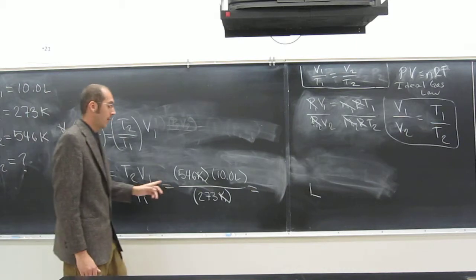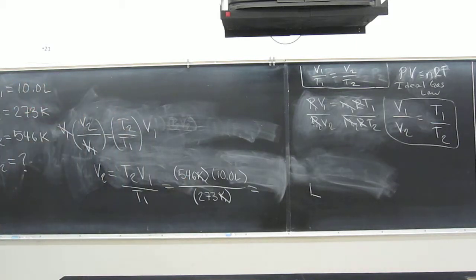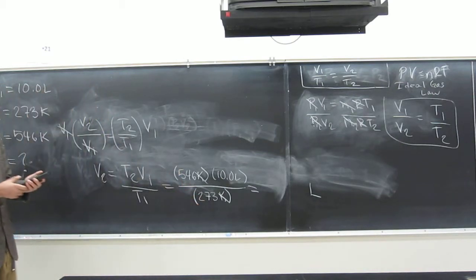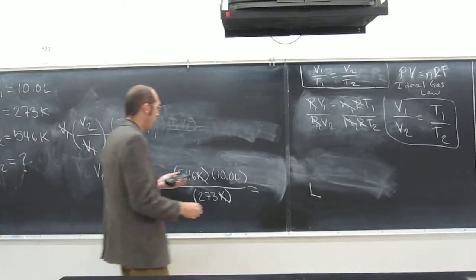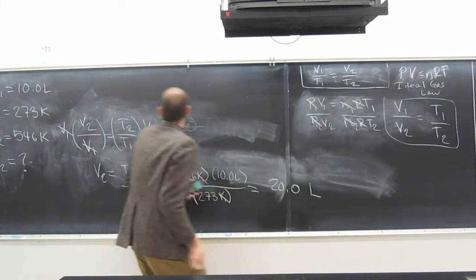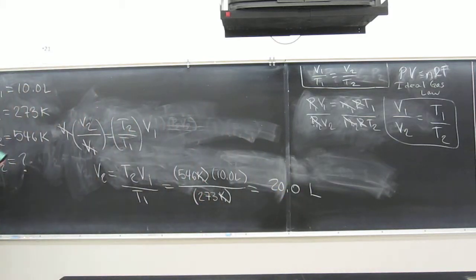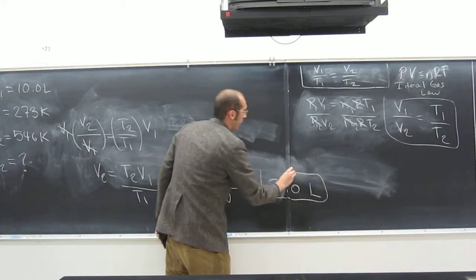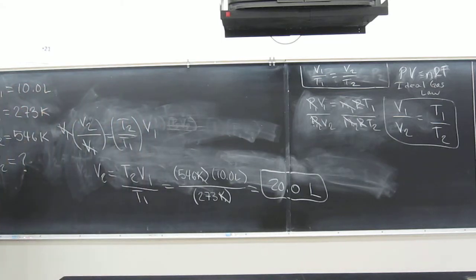So what do we do? We can get our calculators out if you can't do this in your head. This is 2 divided by 1, essentially. So let's just do this together. 546 times 10. And then divide that by 273, right? And then what do we get? 20.0, right? Why would we need 3, 3, 3, 3? And then I like it when you guys put a box around it. That makes me happy. So I know that's your final line.